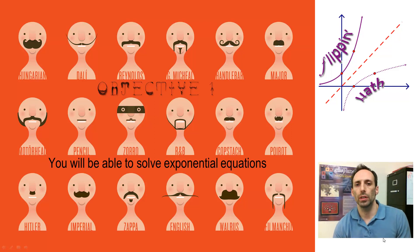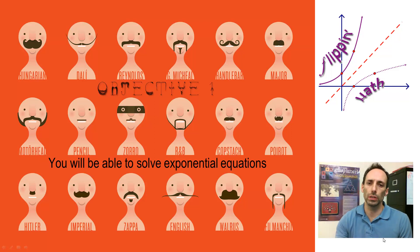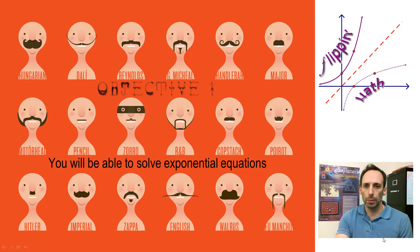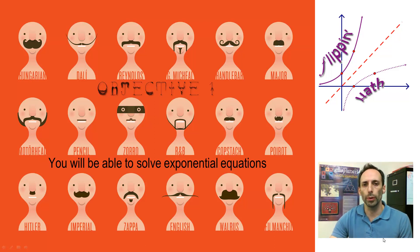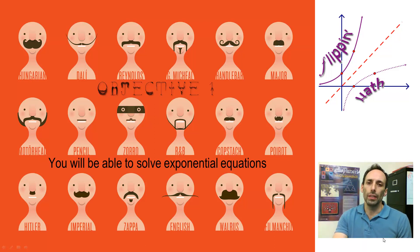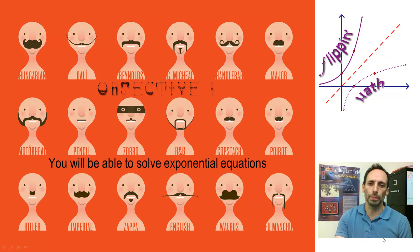We've been talking about solving exponential equations, and we basically have two ways. One is the mustache property — if you can make the bases the same, then the exponents are the same. And the other one is to do the inverse, which is a logarithm.